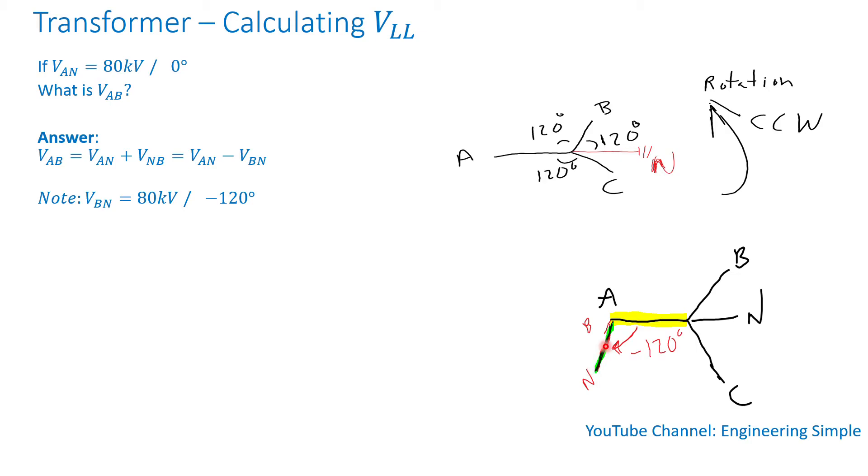So then I can rewrite this as VAB equals 80 kV at 0 degrees minus 80 kV at minus 120 degrees.